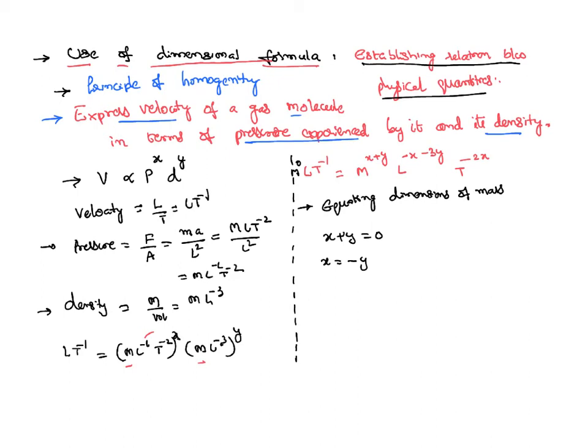Equating the dimensions of length: -x - 3y = 1. And then equating the dimensions of time: -2x = -1, so x = 1/2. Put that x = 1/2 here.